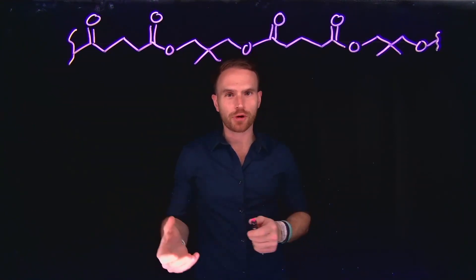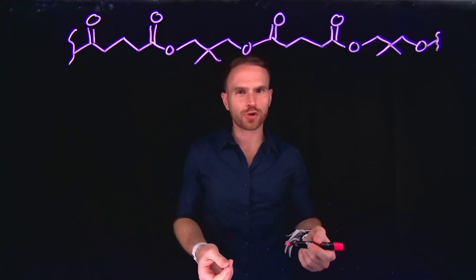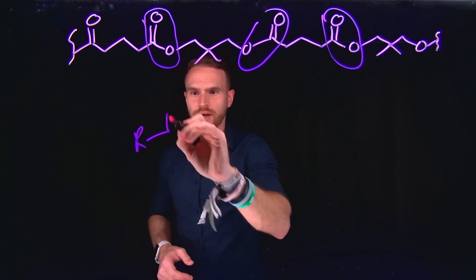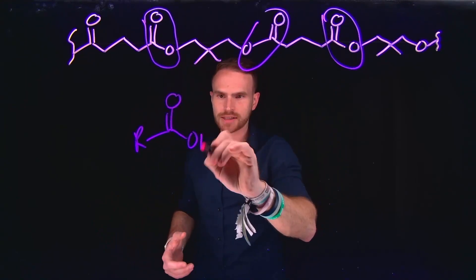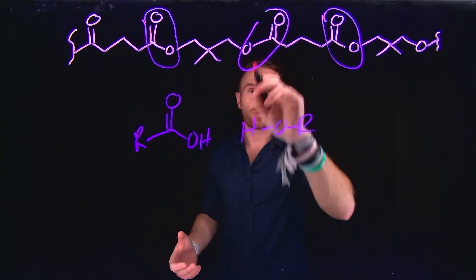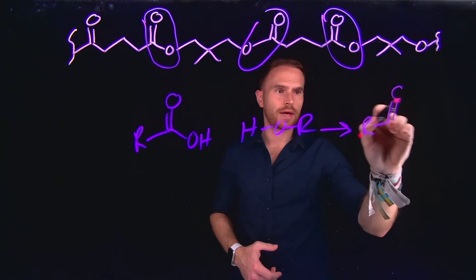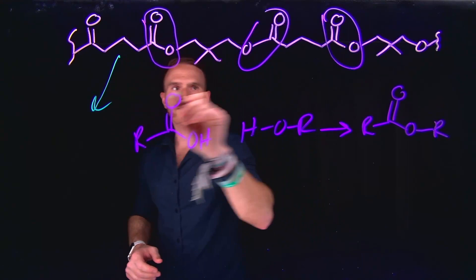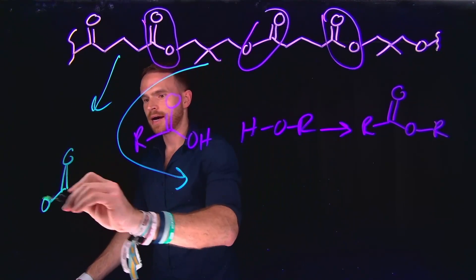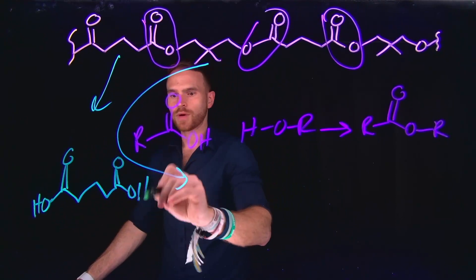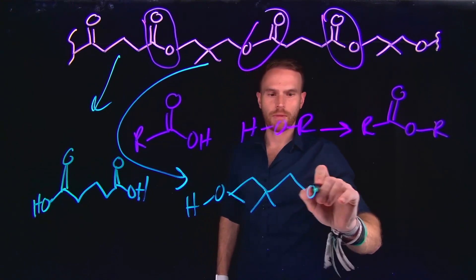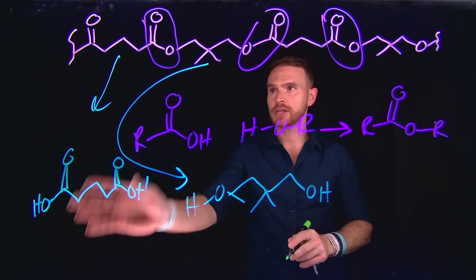The first step in determining which monomers were used to generate a specific polymer is to identify what functional groups are repeating. In this case, I see repeating esters throughout this molecule. Previously, we've learned about esterification reactions that occur when a carboxylic acid reacts with an alcohol. This is called Fischer esterification. From there, we can identify the repeating units to use as individual monomers. For example, if we take a dicarboxylic acid and react it with a diol alcohol, we can identify the individual monomers that underwent Fischer esterification to generate our polymer species.